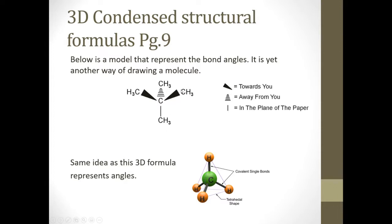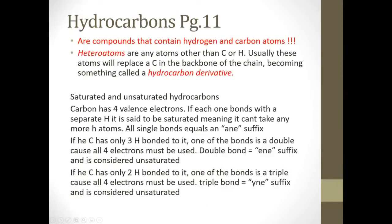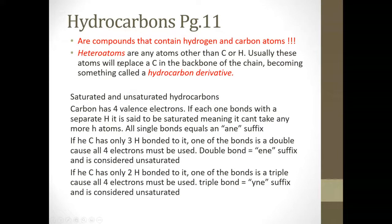Let's get into hydrocarbons now that we've discussed all the different types of pictures we could be facing. Hydrocarbons are compounds that contain hydrogen and carbon. Later in the ILM, we'll get into something called heteroatoms, which are any atoms other than carbon or hydrogen. We generally substitute hydrogen in the backbone of the chain, making something called a hydrocarbon derivative. But we'll start out addressing simple carbon and hydrogen atoms, then look at what happens when we put other atoms into one of these chains.